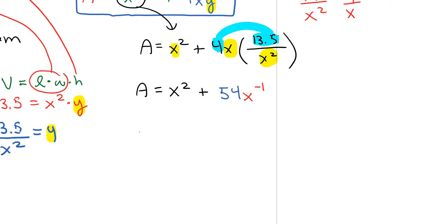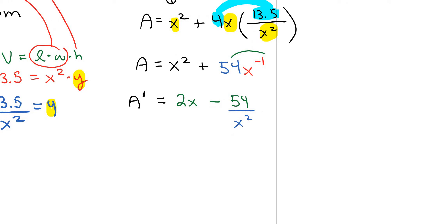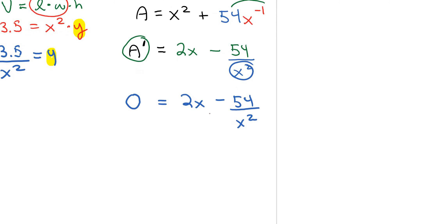Taking the derivative: A prime equals 2x, and using the power rule on the second term, negative 1 times 54 gives negative 54 x to the power of minus 2, which I would write as negative 54 divided by x squared. To minimize, we set the derivative equal to zero. I take this part and move it to the other side, so 54 over x squared equals 2x — and now this is just algebra.